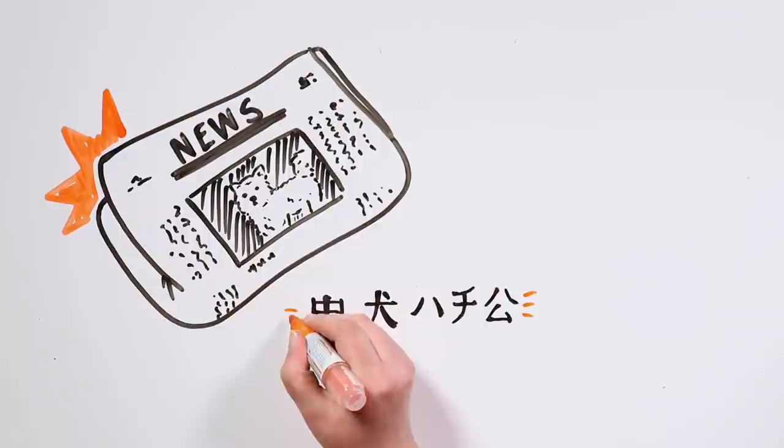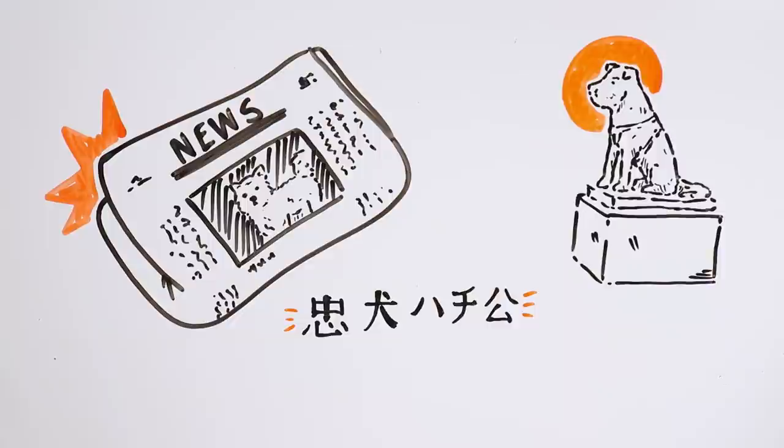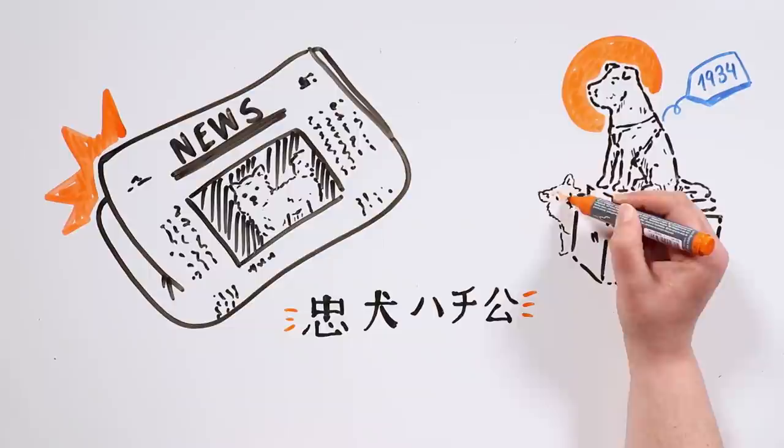But the homages didn't end there. In April 1934, a bronze statue in his honor was erected near the station, and Hachiko himself was able to attend its inauguration.